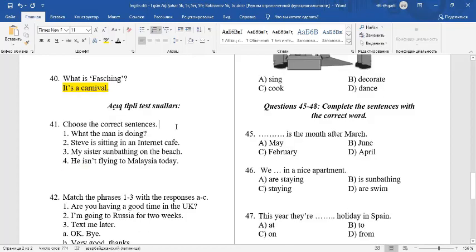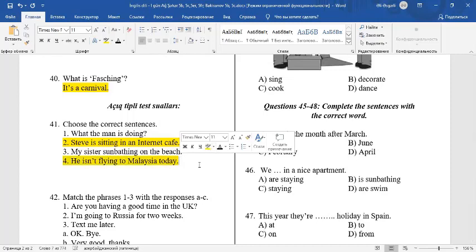41. Choose the correct sentences. 1. What the man is doing. It's an incorrect sentence. We must say what is the man doing? 2. Steve is sitting in an internet cafe. It's a correct sentence. Subject plus is plus verb ing. My sister sunbathing on the beach. It's an incorrect sentence. Here is missing. My sister is sunbathing on the beach. 4. He isn't flying to Malaysia today. It's a correct sentence. He plus isn't plus verb ing. 2 and 4 are correct sentences.